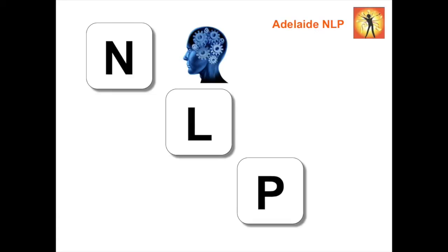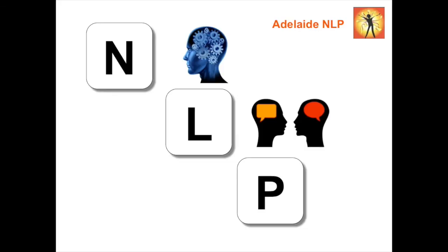The N of course stands for Neuro, which is to do with our mind and how our brain is wired together, and the patterns that our brain goes through to understand the world and shape the way we communicate with people and the way we think about ourselves. Then the L is our Linguistics — how we're able to form our thoughts into communication with the external world. What words we use and how we say it, and it also includes our body behaviour and the messages we give through our tonal language.